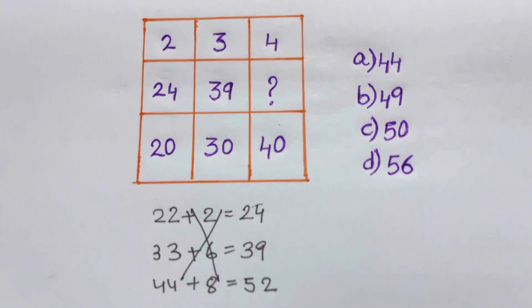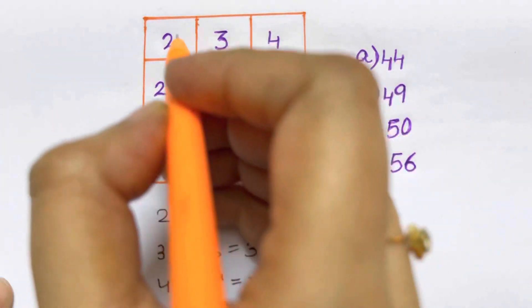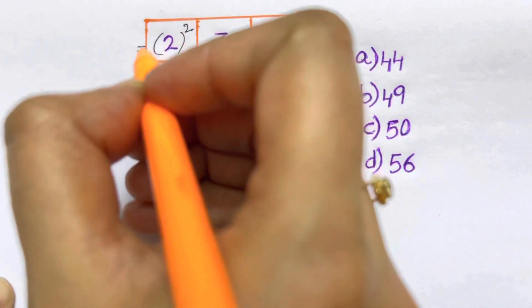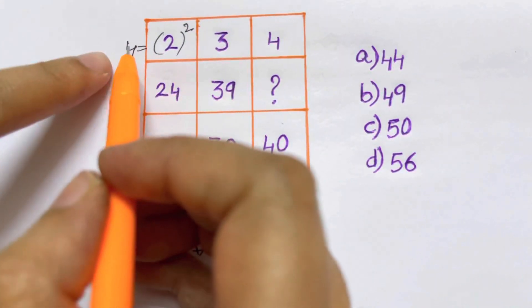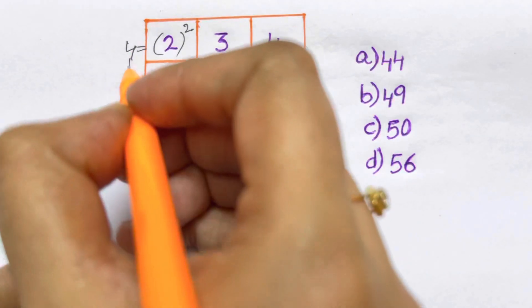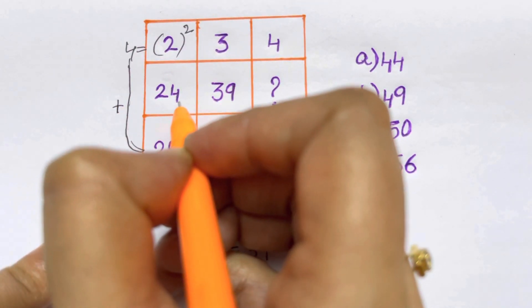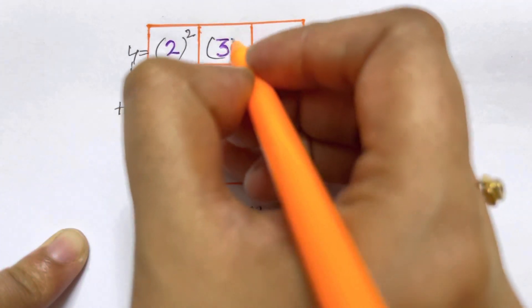So all we have to do is, what I'm going to do here is I'm going to square the first number. That's 2 squared is going to give you 4, and then I'm going to add it to 20. 20 plus 4 is just going to give me 24.